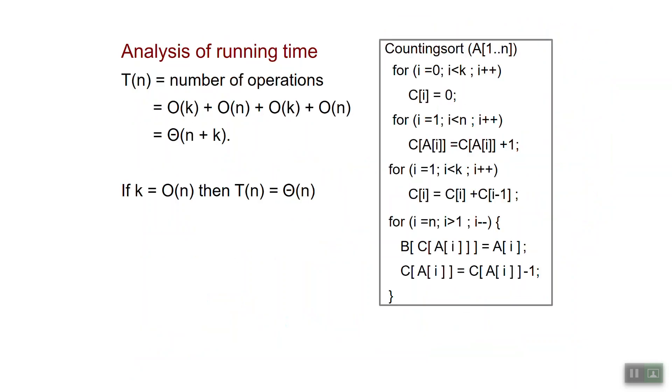Let's analyze the running time of counting sort. Well if T(n) is the number of operations, we have the first for loop. It just does something constant time k times. That gives me order of k. The second for loop gives me order of n. The third is again order k and then again order n. And that's theta of n plus k.